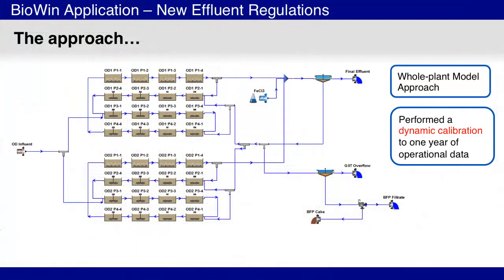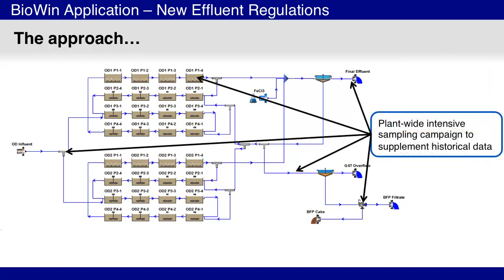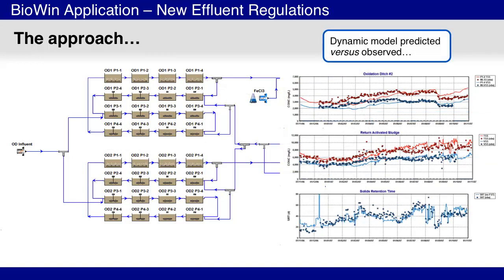After setting up the Biowin flow sheet and incorporating all operational aspects, the model was calibrated to one year of time-varying performance data. In order to accomplish this, a supplemental plant sampling campaign was conducted to augment the existing dataset. Minor adjustments were made to model parameters until the model predictions matched the observed plant responses for a variety of parameters.